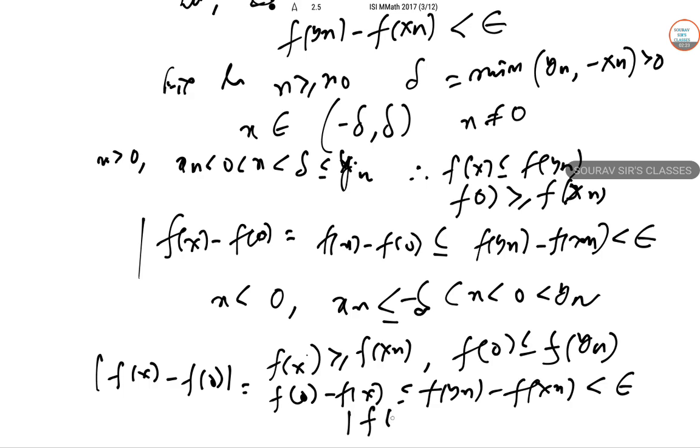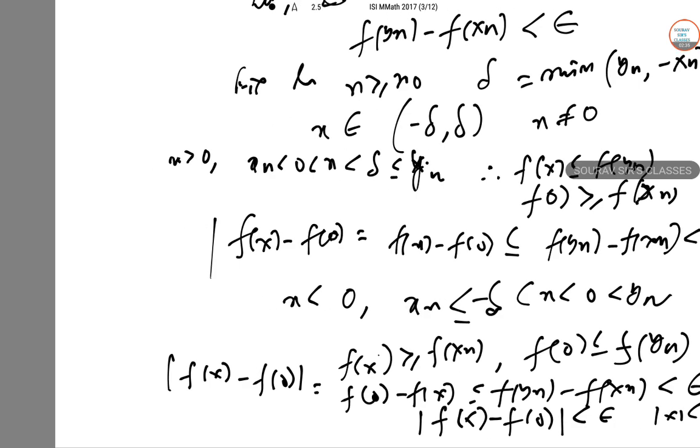Therefore, in both cases we have |f(x) - f(0)| < ε whenever |x| < δ. This proves that f is continuous at 0. Hence proved.